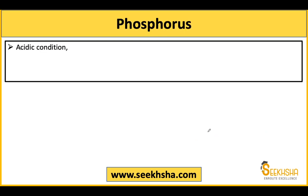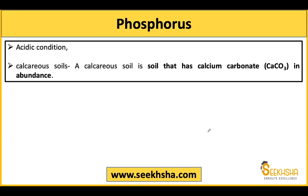Now let's talk about phosphorus deficiency. If the soil is acidic, you will see phosphorus deficiency in it. If the soil is calcareous — meaning soils which are abundant in calcium carbonate (CaCO3) — you will also see phosphorus deficiency. A question can be asked: in which soil conditions does phosphorus deficiency occur? An important piece of knowledge is that calcareous soils are those which are rich in calcium carbonate.